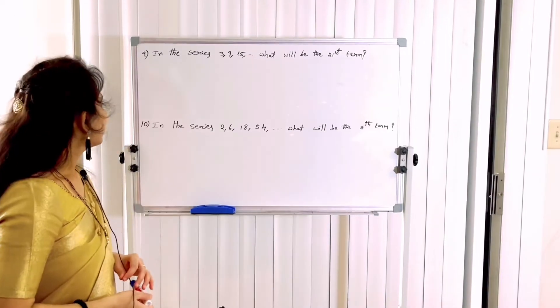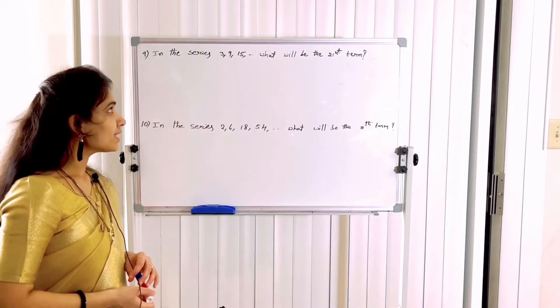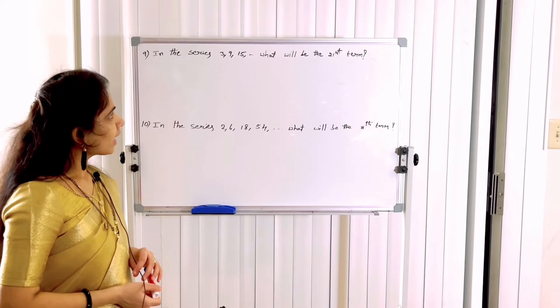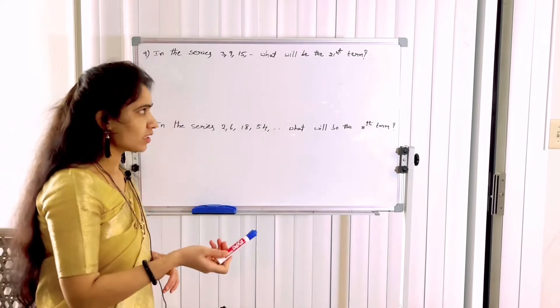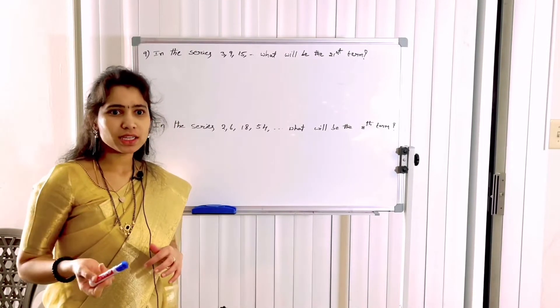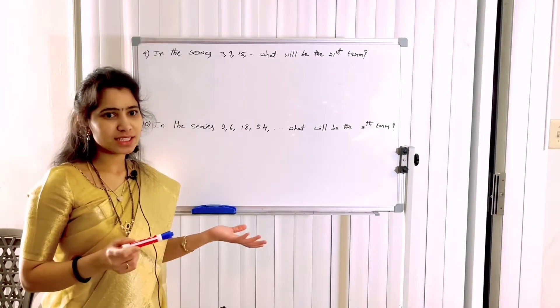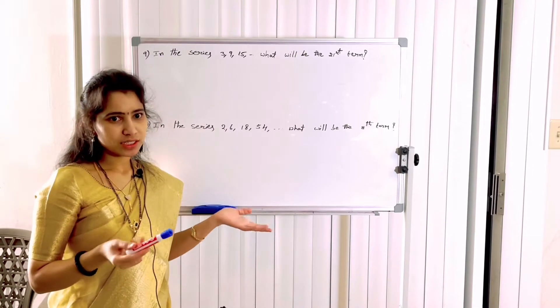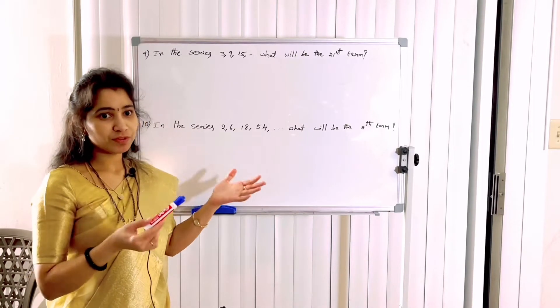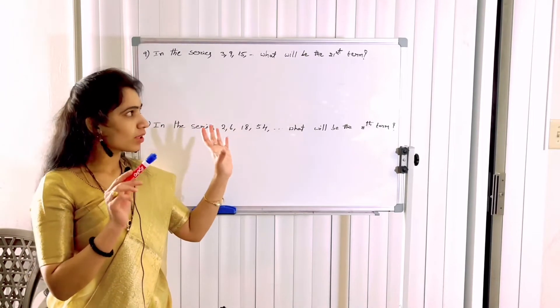9th problem: In the series 3, 9, 15 — what will be the 21st term? What's the number of the series? Every third term? What's the third term, fourth term, what two terms?